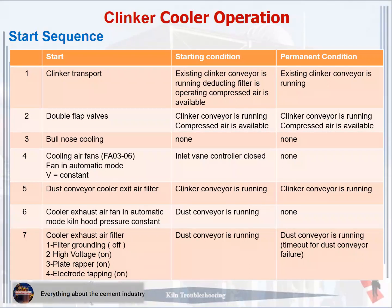Step 3: Start bull nose cooling. Starting condition: none. Permanent condition: none. Step 4: Start cooling air fans FA03-06, fan in automatic mode, kiln hood V equals constant. Starting condition: inlet vane controller closed. Permanent condition: none. Step 5: Start dust conveyor cooler exit air filter. Starting condition: clinker conveyor is running. Permanent condition: clinker conveyor is running. Step 6: Start cooler exhaust air fan in automatic mode.